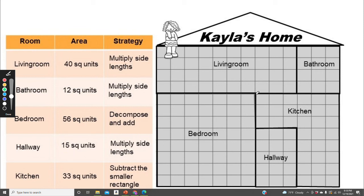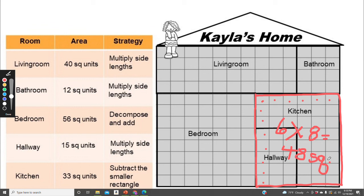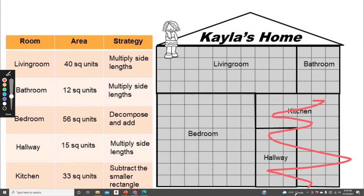Now that I know the area of the hallway, I can find the area of the kitchen. So I'll start by finding the area of the whole outside rectangle, and that would be 1, 2, 3, 4, 5, 6 times 1, 2, 3, 4, 5, 6, 7, 8. 6 times 8 equals 48 square units.